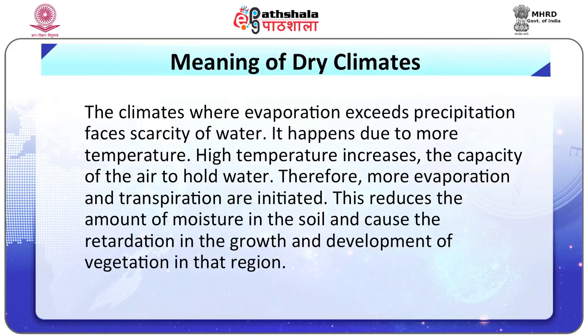The climates where evaporation exceeds precipitation face scarcity of water. It happens due to more temperature. High temperature increases the capacity of the air to hold water, therefore more evaporation and transpiration are initiated. This reduces the amount of moisture in the soil and causes retardation in the growth and development of vegetation in that region.